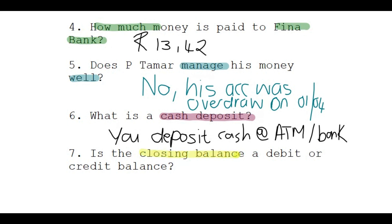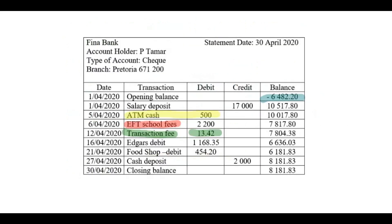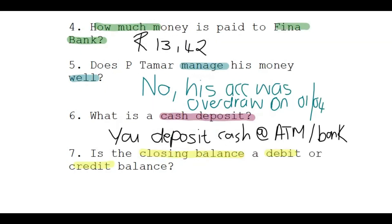Is the closing balance a debit or credit balance? The closing balance was a positive amount of 8,100. If there's no negative in front of it, it is a credit balance. So this month, he actually did well.